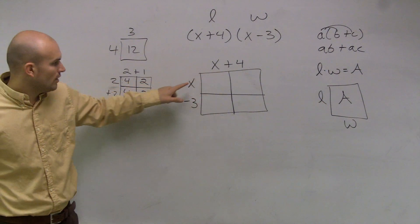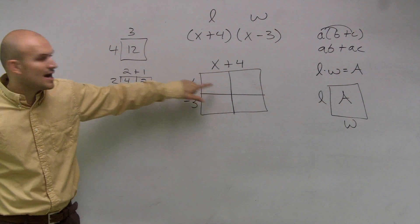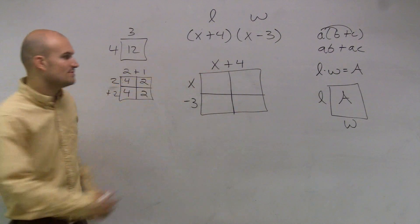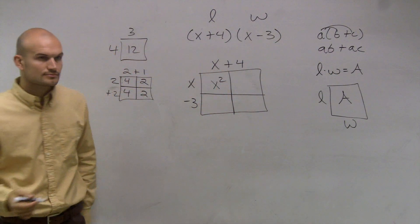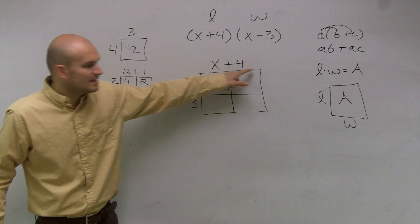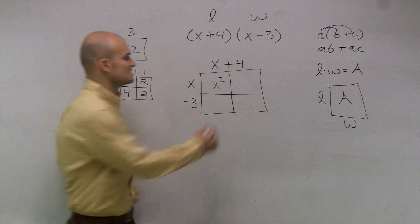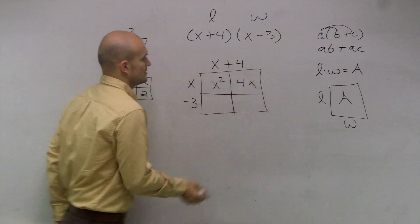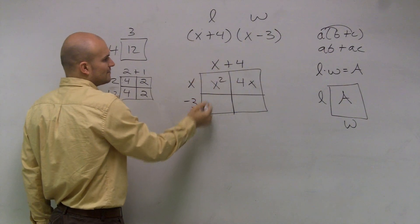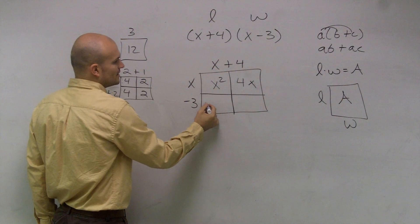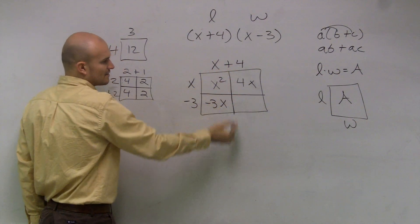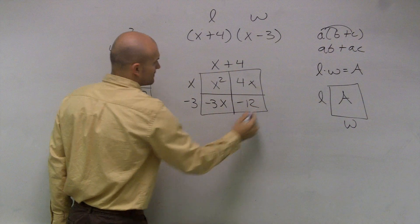So now what I need to do is I need to figure out what is the area of this box. Well, we could say the width is x and the length is x. So it would be x times x, which is x squared. This one we could say has a width of x and a length of 4. 4 times x is positive 4x. Here we have width of negative 3 and a length of negative 3 and a width of x. So that's going to be negative 3x. Here we have 4 times negative 3, which is going to be a negative 12.